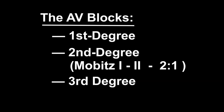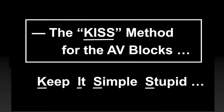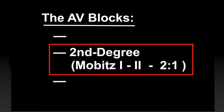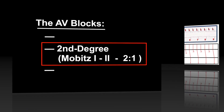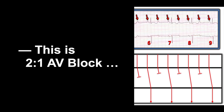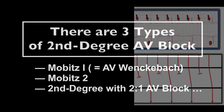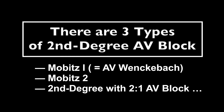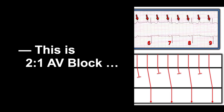What degree is it? Is it first degree? No — because not every P wave is conducting. Is it third degree? No — because some P waves are conducting. Therefore, by the KISS method, this is a type of second-degree block. This is the special type of second-degree AV block because there is two-to-one conduction. With Wenckebach, the PR interval progressively increases until you drop a beat. The problem is with two-to-one conduction — one beat conducted then dropped — P waves never have a chance to increase the PR interval, which is why we cannot be sure which type we have. But we do have a second-degree AV block.